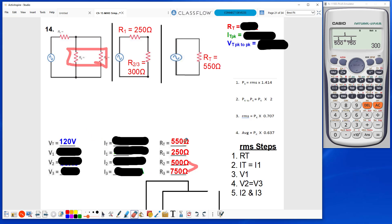I have 2 out of 3, so now I can find IT by dividing the 120 volts by 550 ohms, which gives me 218.18 milliamps.